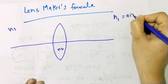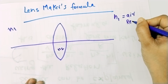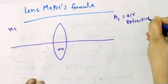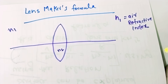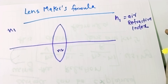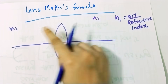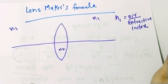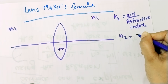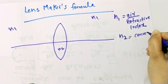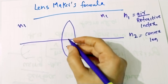N1 is air. Here is a medium with a refractive index — a constant value. It is the same value, whether it is glass or water. The refractive index N2 is the lens material. So we have N1 for the surrounding medium and N2 for the convex lens.